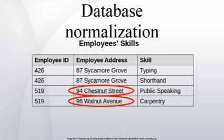Database normalization is the process of organizing the fields and tables of a relational database to minimize redundancy and dependency. Normalization usually involves dividing large tables into smaller tables and defining relationships between them. The objective is to isolate data so that additions, deletions, and modifications of a field can be made in just one table and then propagated through the rest of the database using the defined relationships.